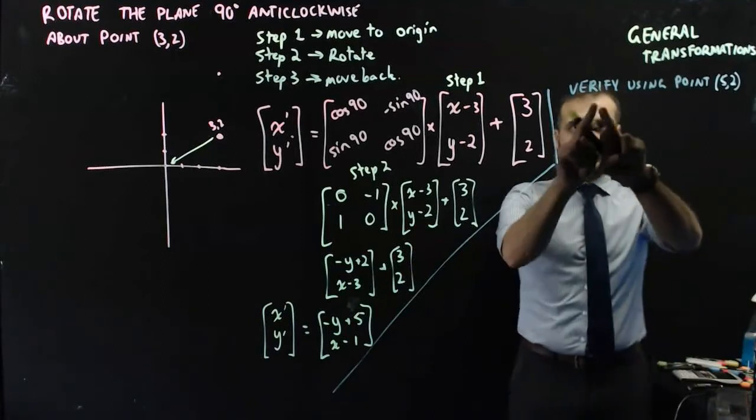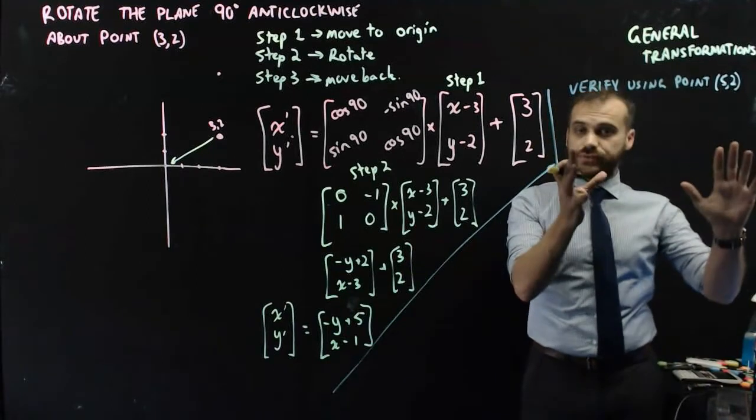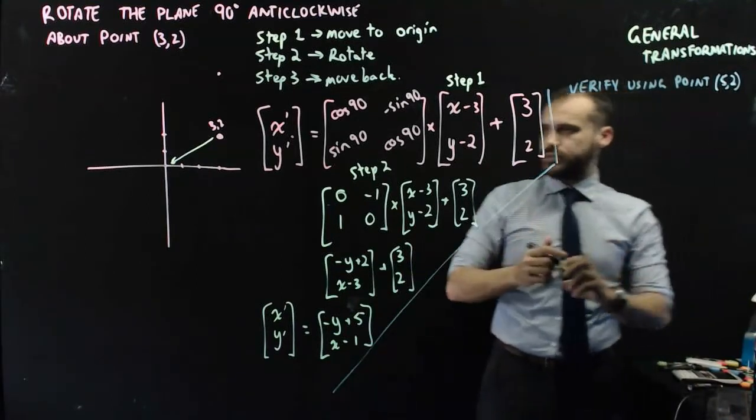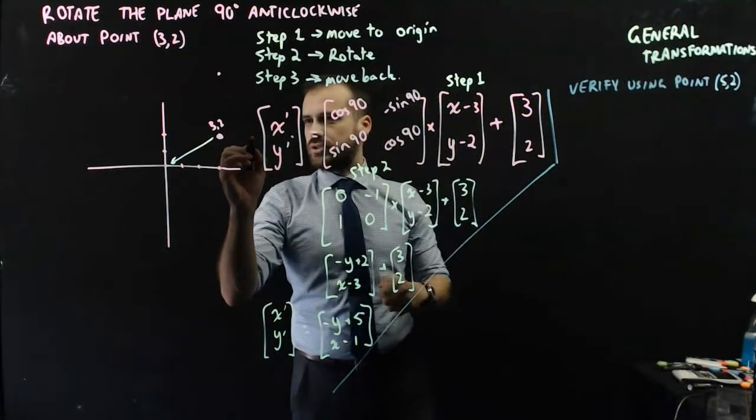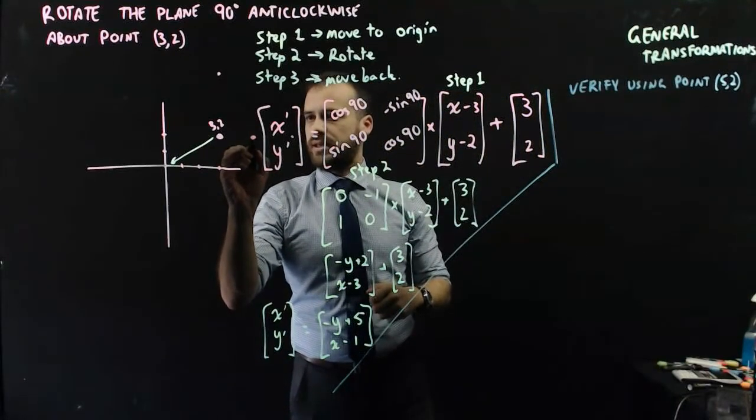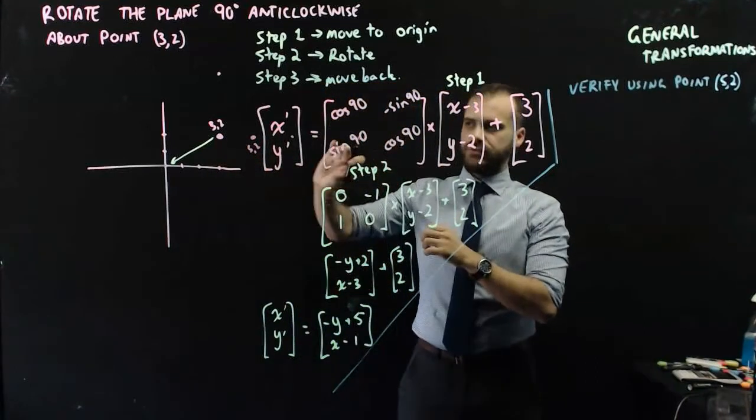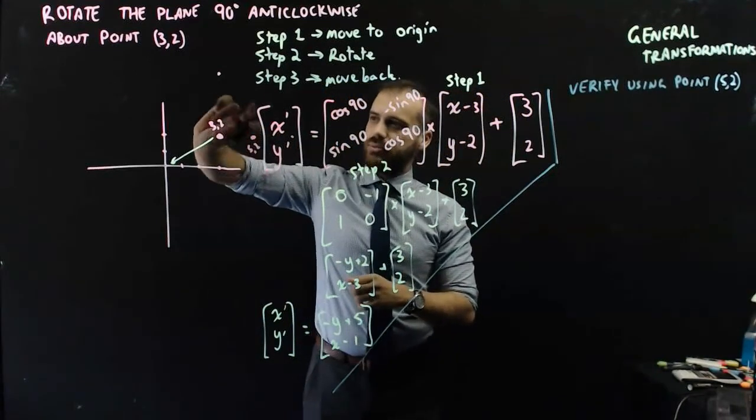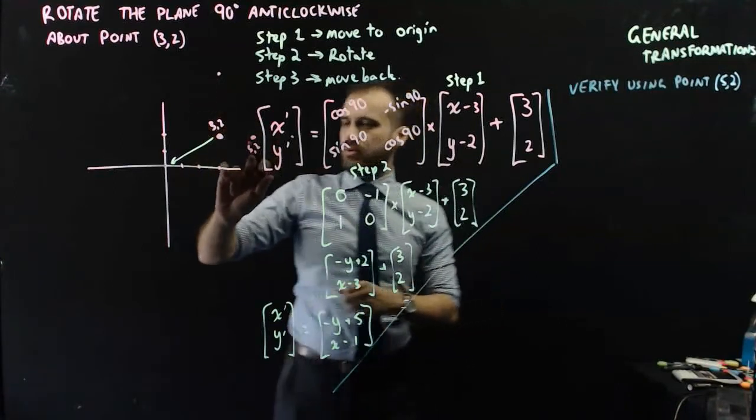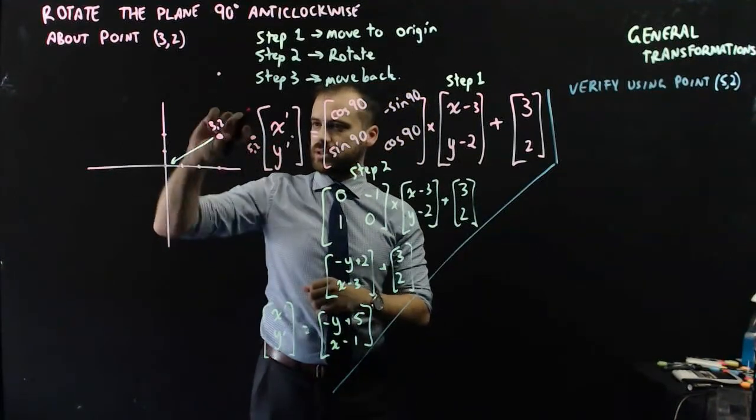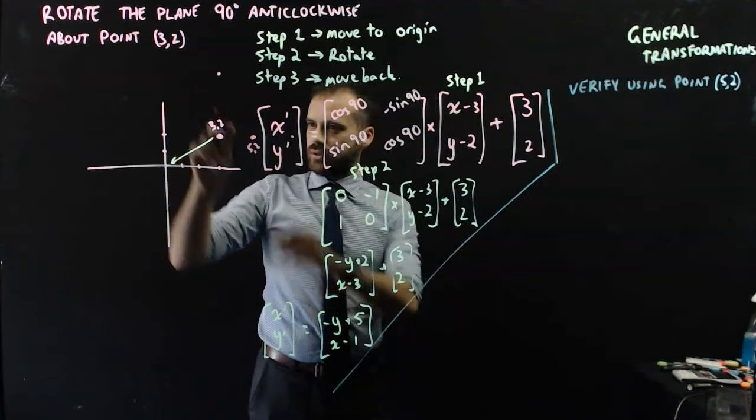Now, just to convince ourselves, we're going to verify it using point (5, 2). So I've chosen (5, 2) because (5, 2) is about here. And I can see that if I rotate (5, 2) 90 degrees around (3, 2), it will become point, well,